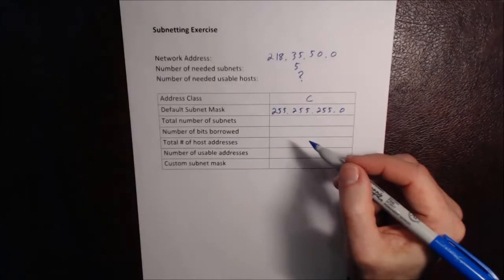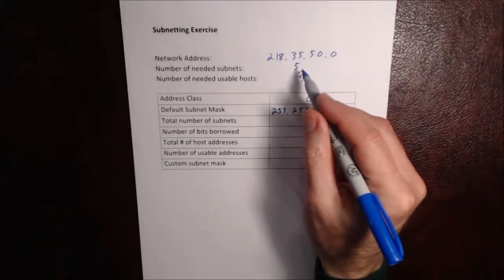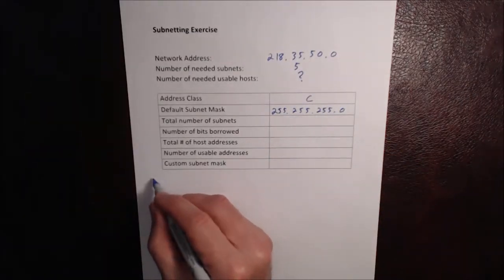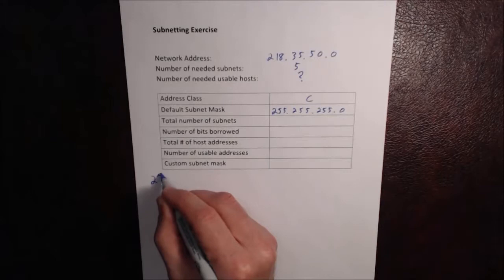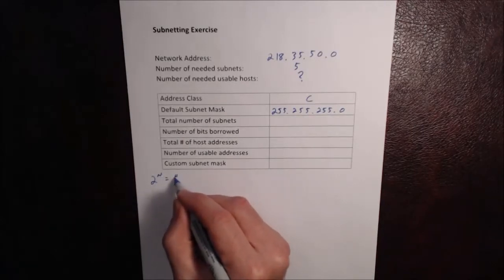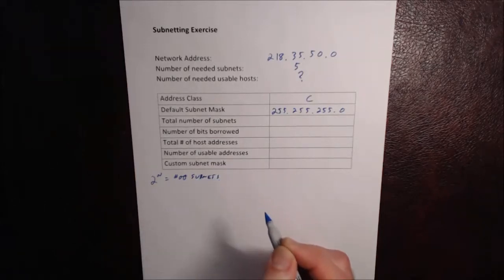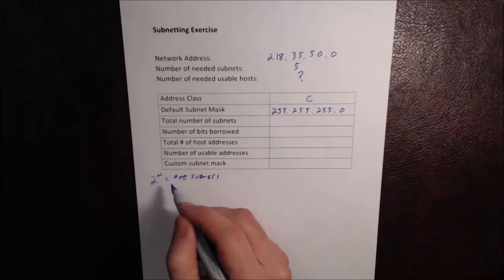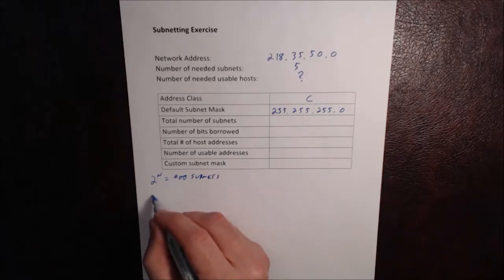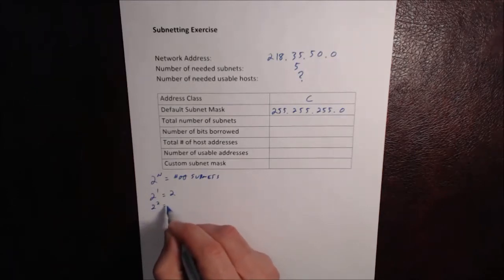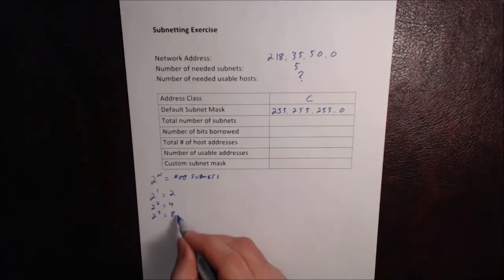The total number of subnets is calculated based on needing five. Remember that the formula is 2 to the n, which tells us the number of subnets, where n is the number of bits borrowed. If we borrow one bit, that gives us two. Two bits gives us four. And three bits gives us eight. So we're going to borrow three bits to get eight subnets.